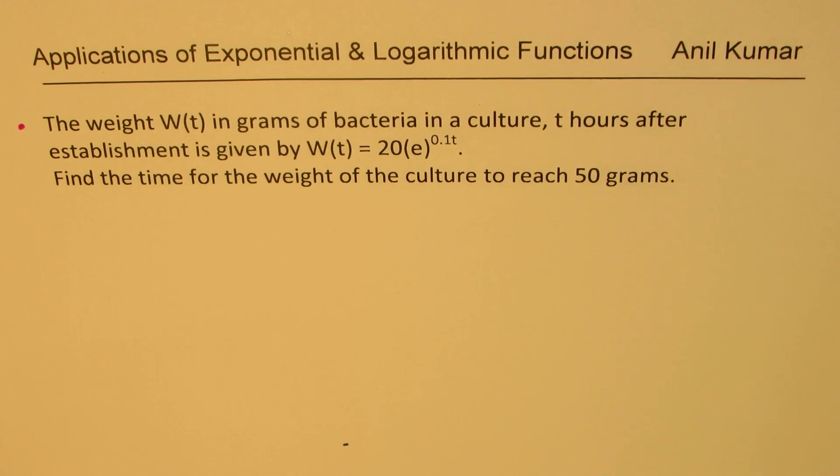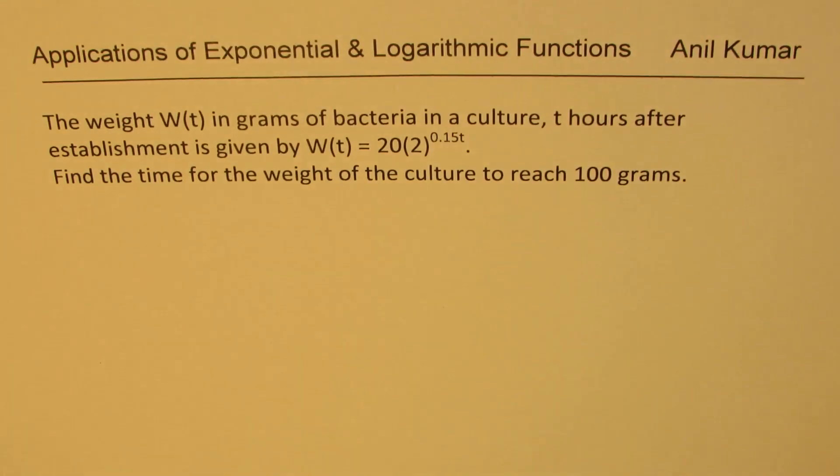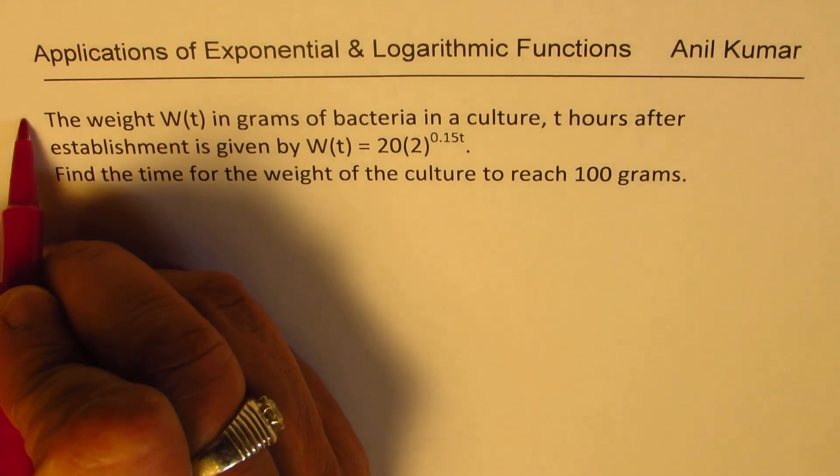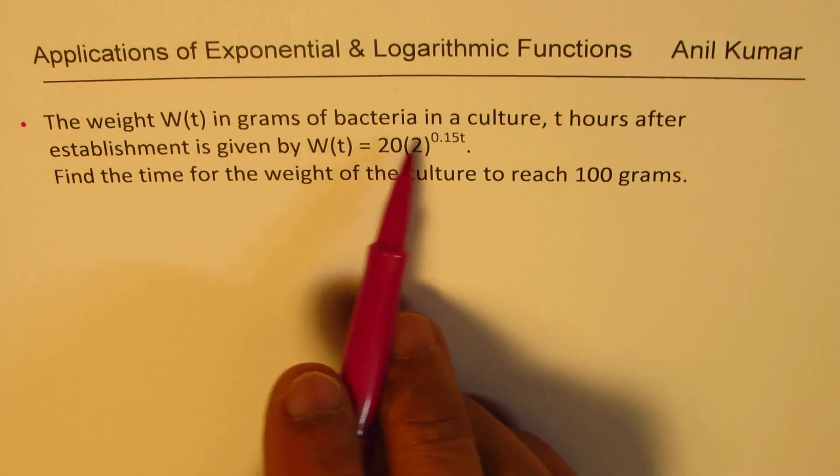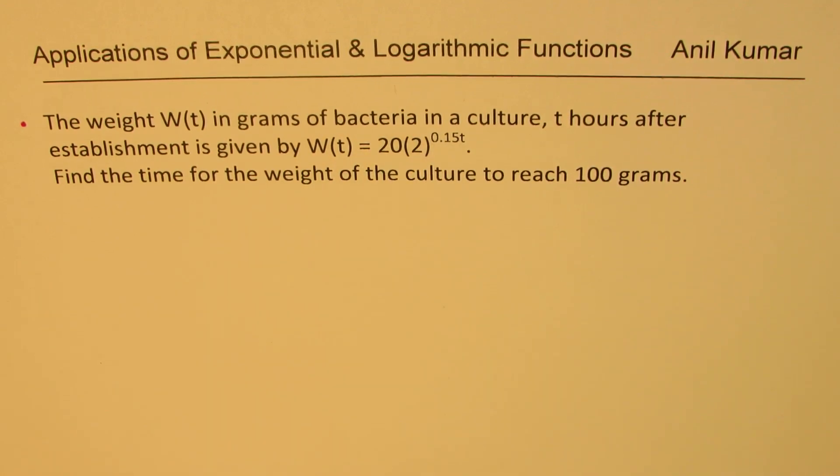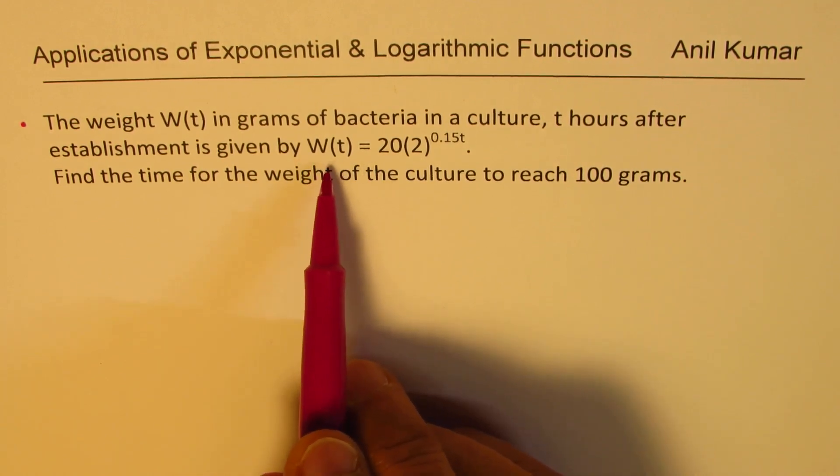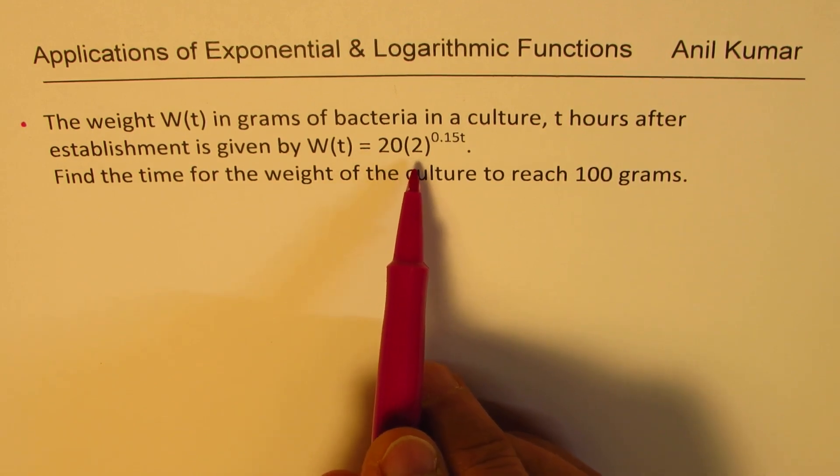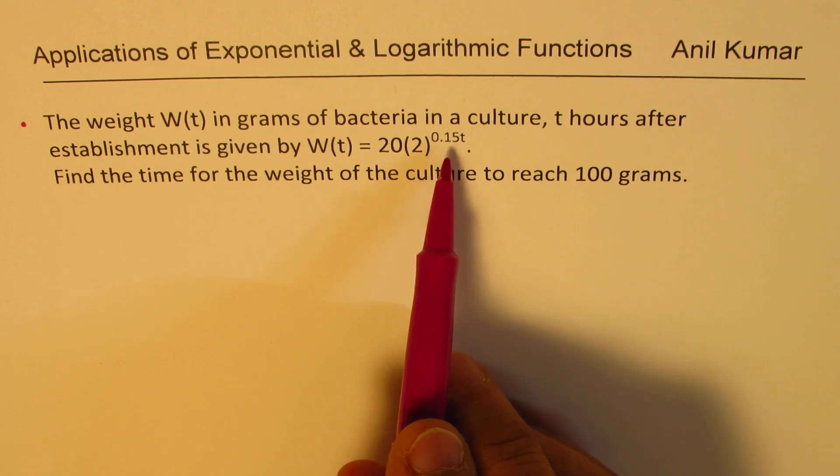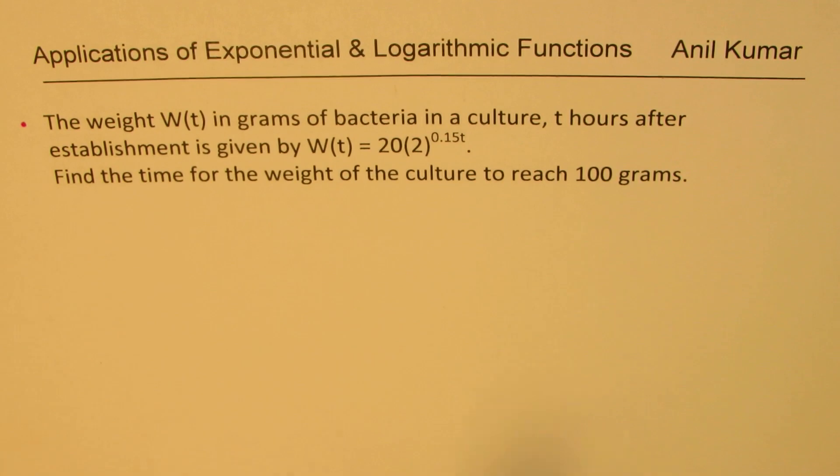Almost the same question except instead of e, we have some other number. The weight W(t) in grams of bacteria in a culture t hours after establishment is given by W(t) equals 20 times 2 to the power of 0.15t. Find the time for the weight of the culture to reach 100 grams.